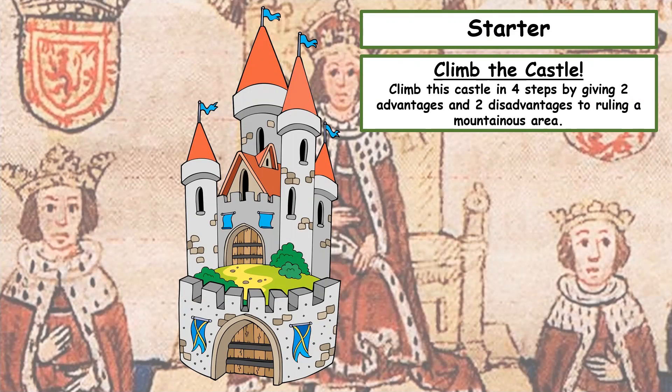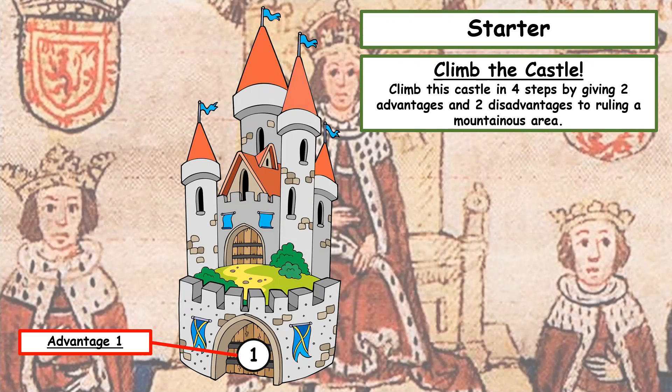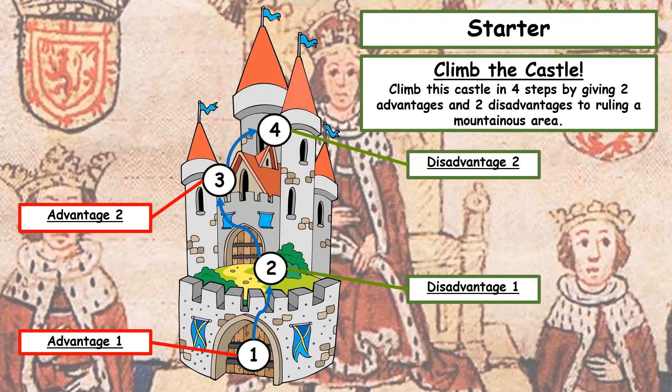As a starter, I want you to climb this castle, and there are four steps to climb this castle. I want you to think back to the last lesson we did on Edward and Llewellyn, and I want you to give two advantages and two disadvantages to ruling a mountainous area. Your first step is Advantage 1, then Disadvantage 1, then Advantage 2, and finally Disadvantage 2. You can do this on the worksheets provided, in your books, or on paper. Pause the video and go and do that.